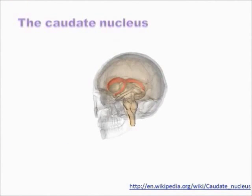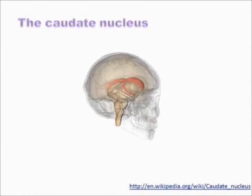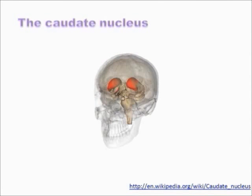The caudate nucleus is a part of the basal ganglia, a network of interconnected nuclei in the middle of the brain.